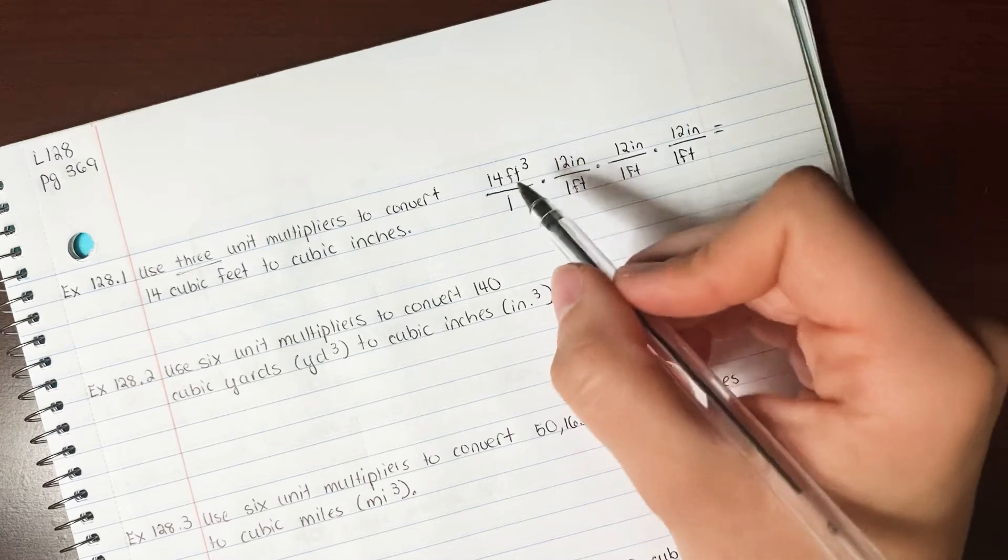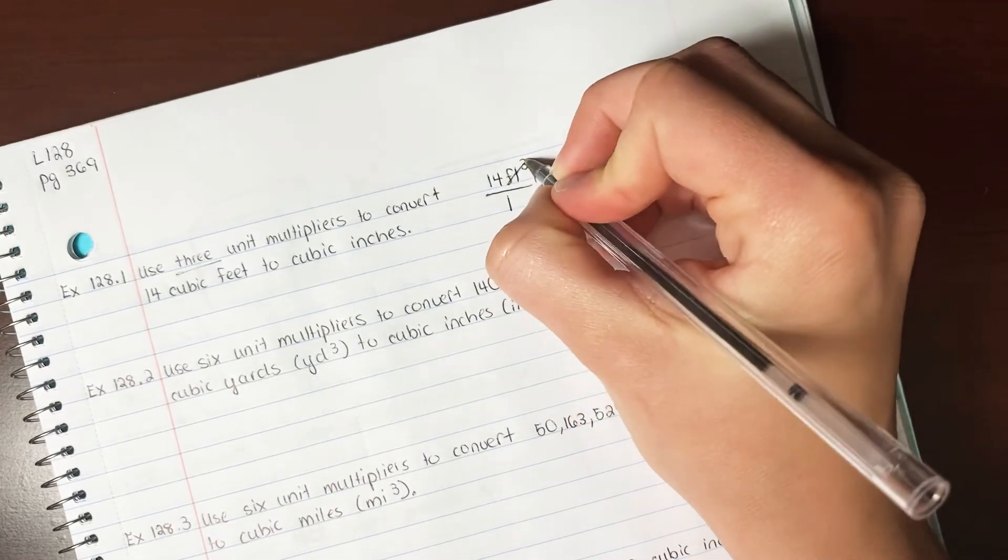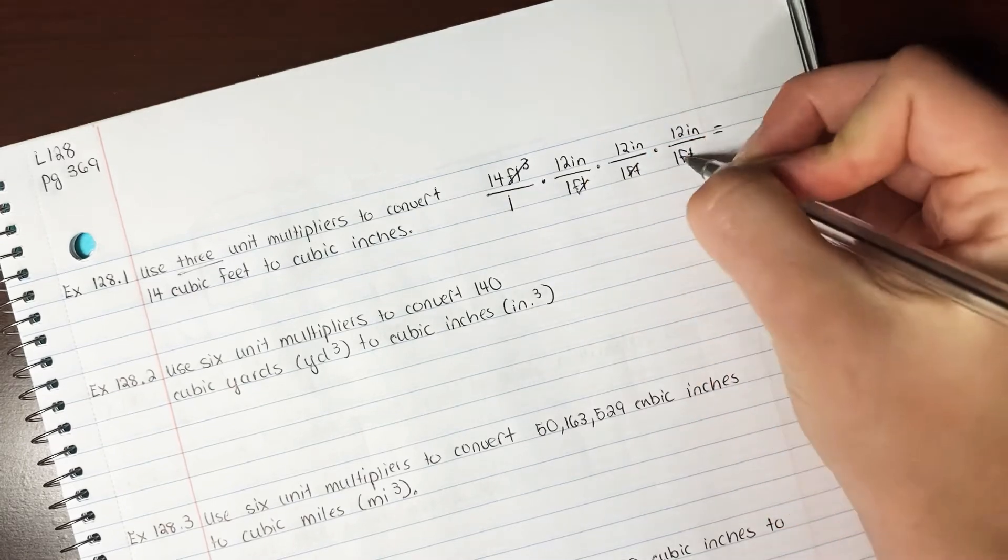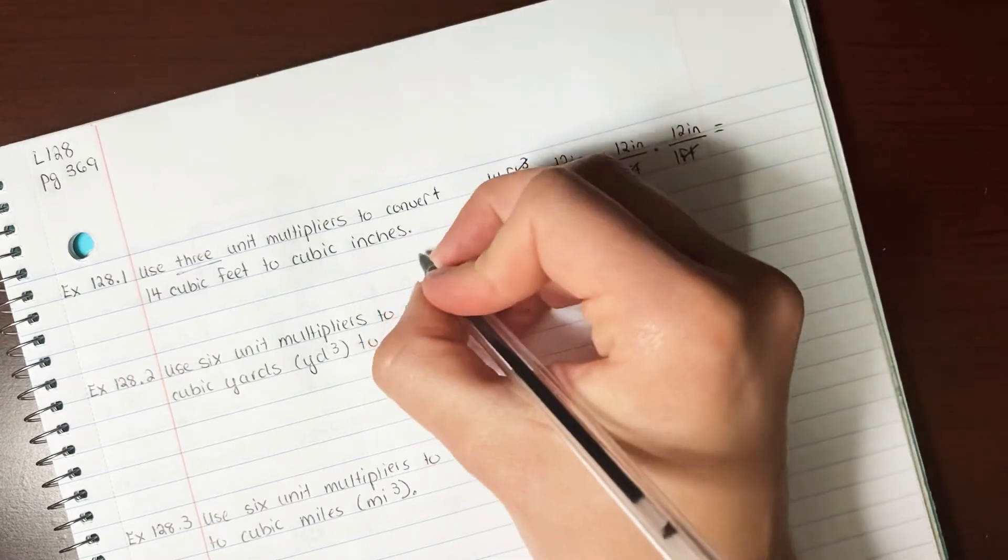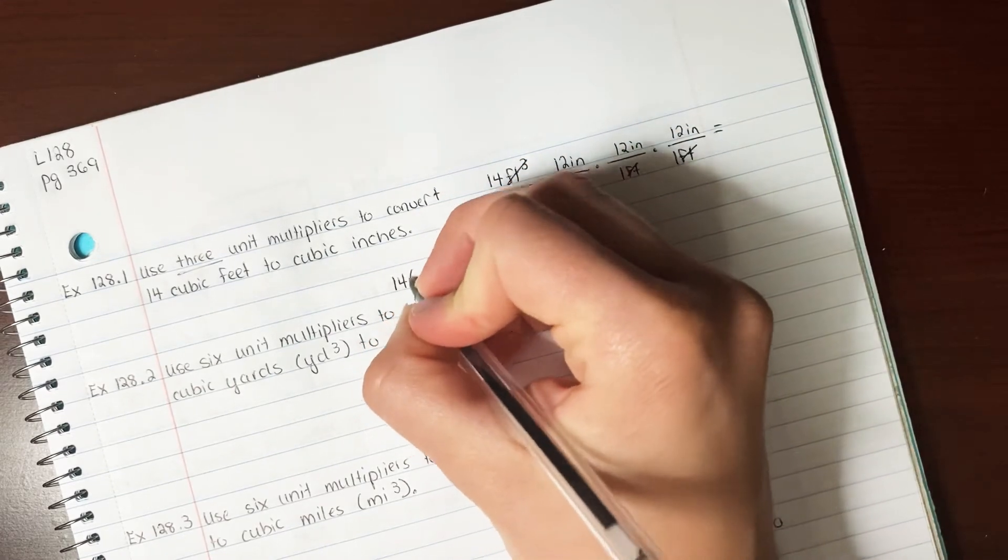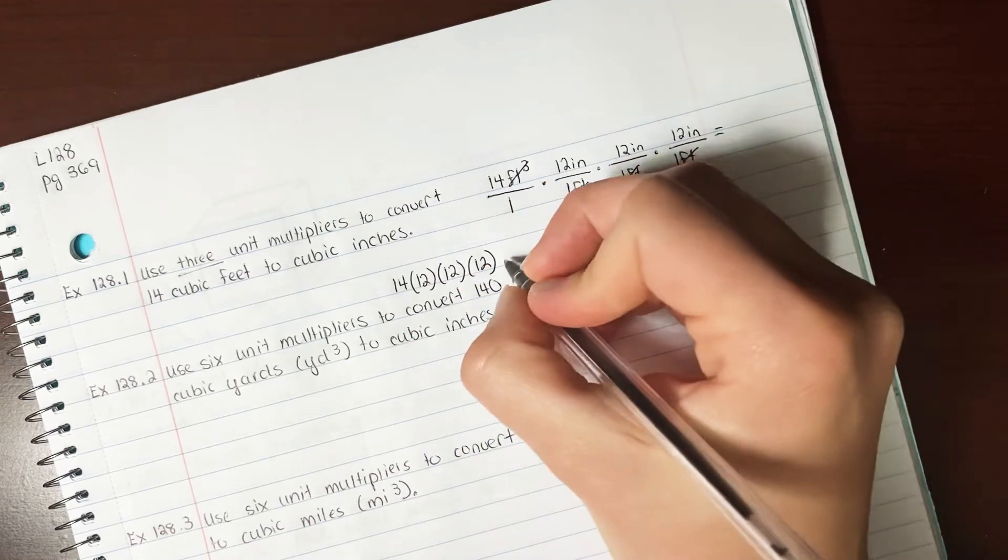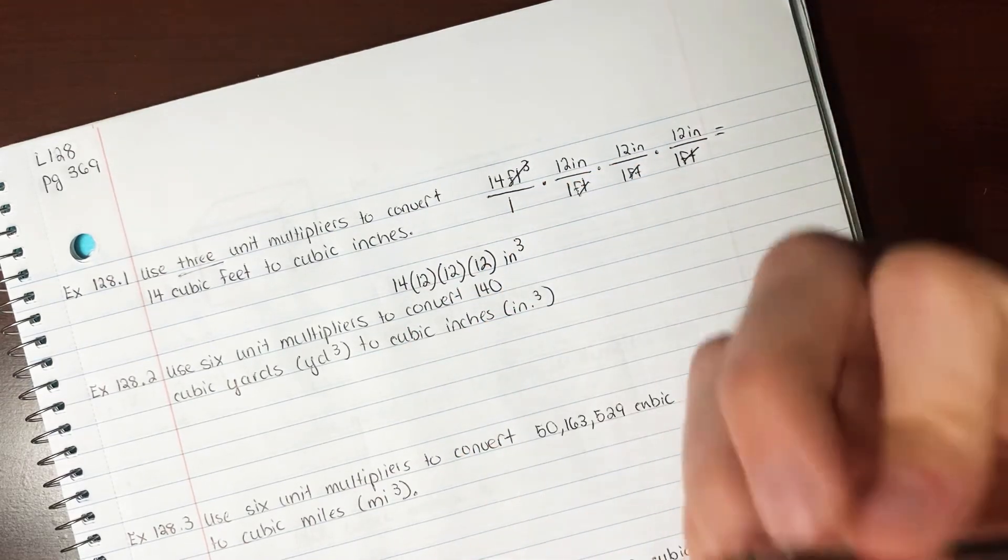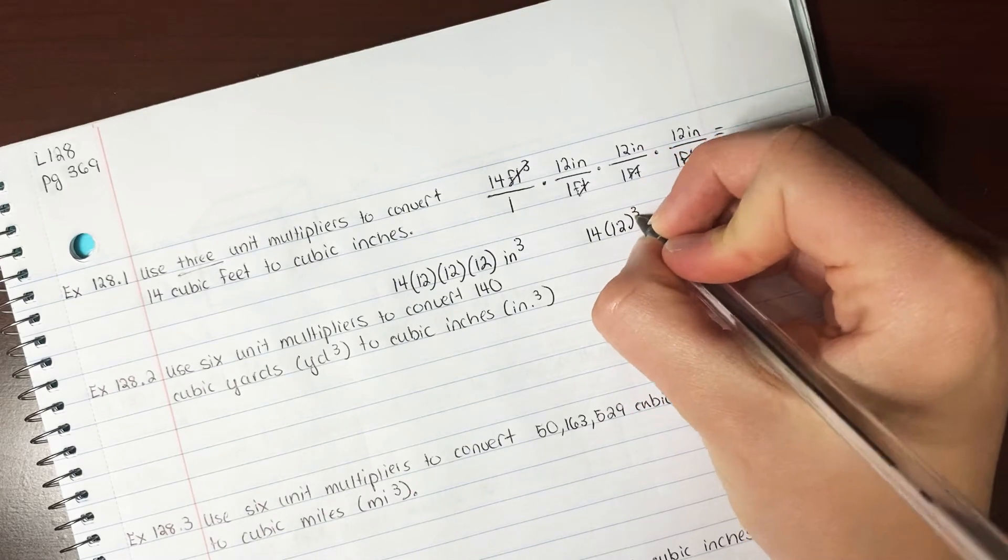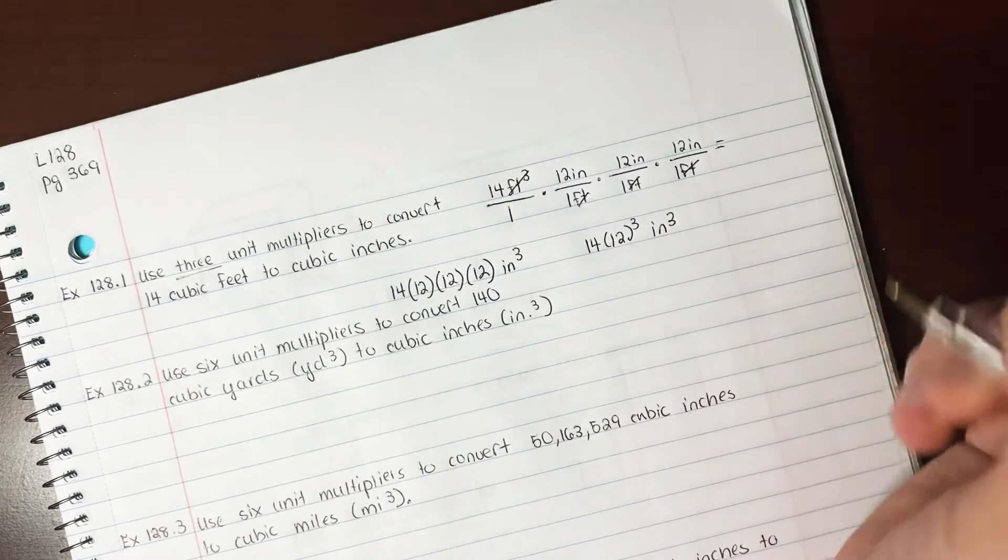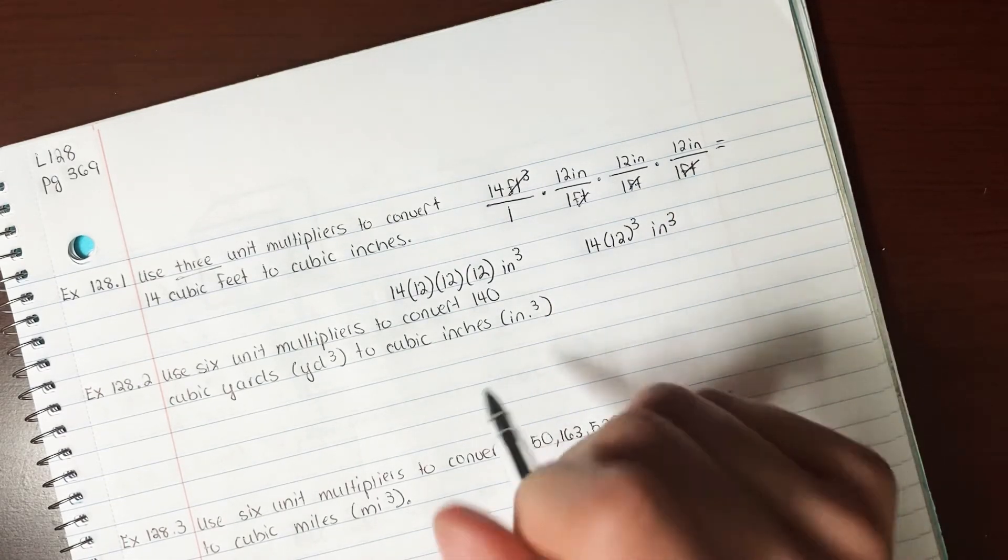Right, because feet cubed is equivalent to feet times feet times feet, three of them. So in order to cancel this out, we need one, two, three feet. So then we would do 14 times 12 times 12 times 12. But you can write your answer 14 times 12 times 12 times 12 inches cubed, and that's an acceptable answer. You could also write 14 times 12 cubed inches cubed, and that's an acceptable answer.